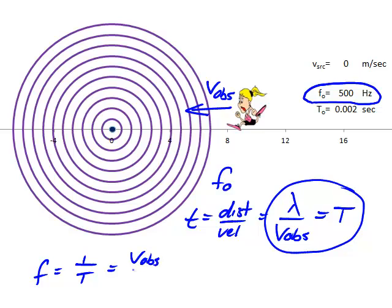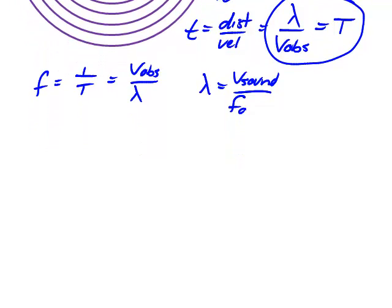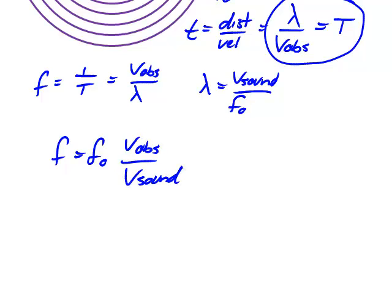So the observer would hear a frequency F equals v-obs over lambda. Lambda is v-sound over F-naught, so replacing lambda with v-sound over F-naught, we get F equals F-naught times the speed of the observer divided by the speed of sound.